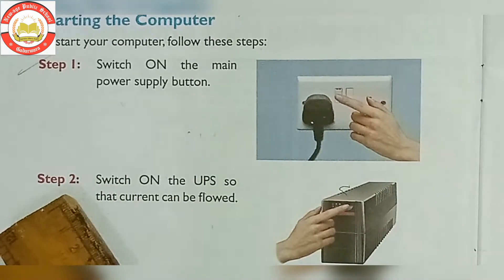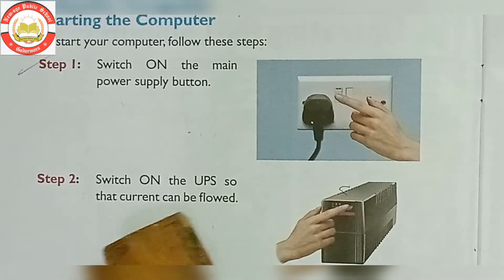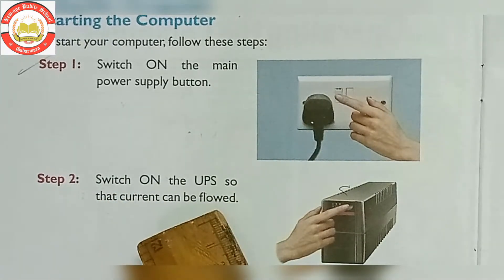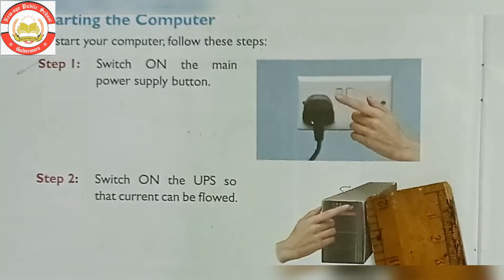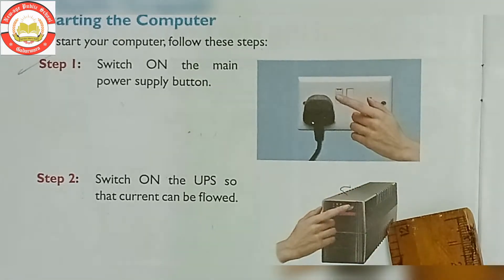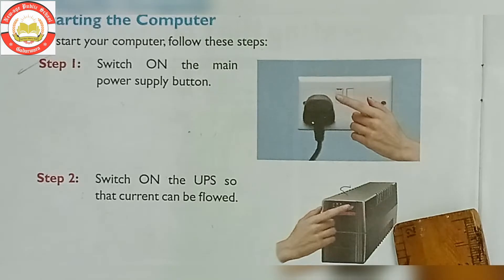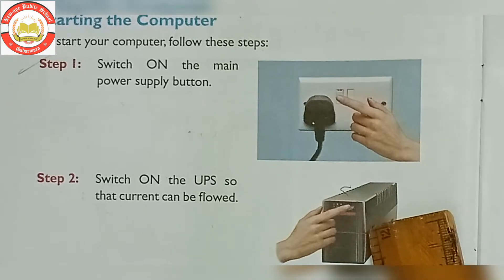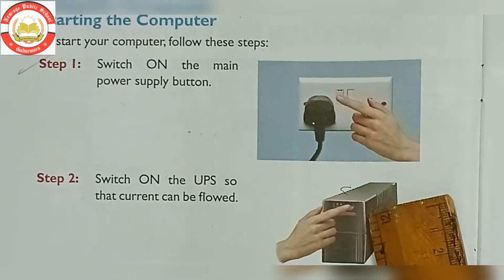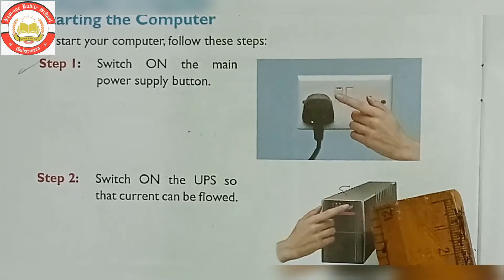Step 2 is to switch on the UPS so that the current will flow. The UPS machine will be on once the main power supply is on.